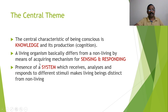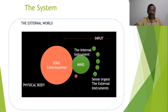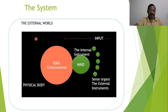We can represent the system in this way: there is the external world, and the physical body is the framework containing the mechanism. Consciousness is there, and as an extension to this consciousness there is a mind, five organs, and sense organs — the external instruments — whose input comes to the soul. So body (sharira), indriya, sattva, and atma — their samyoga is called the system.